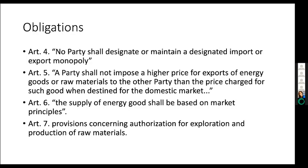Besides the annex explaining what materials and minerals are included, the chapter includes a lot of obligations and restrictions on what protections these corporations are going to have from both sides. Article 4, for example, talks about monopoly: no party shall designate or maintain a designated import or export monopoly. Article 5 says that a party shall not impose a higher price for exports of energy goods or raw materials to the other party than the price charged for such goods when destined for the domestic market — so there are obligations on export pricing practices.